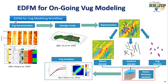That's the whole workflow for vug modeling. First, we need to keep geology information based on vug characterization. We embed the vugs in our geology model. After EDFM, we divide it into three different domains — matrix, fracture, and vug — then solve the Stokes-Brinkman equation and do vug simulation. If you're more interested in vug modeling, we will recently have a workshop to discuss more detail.